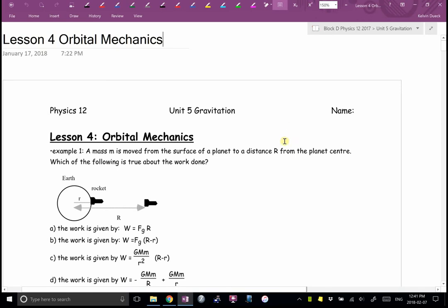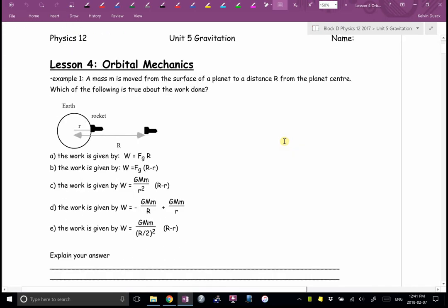You ready? We're just going to now look at some neat situations. Now that we have cosmic potential energy, what can we figure out? Here's the first question. It says this: A mass little m rocket is moved from the surface of a planet to a distance R, big R, from the planet's center. Which of the following is true about the work done? Well, they want us to figure out the amount of work done.